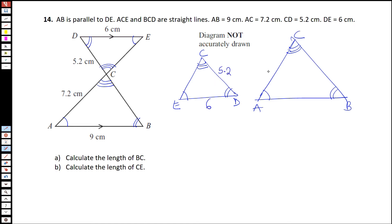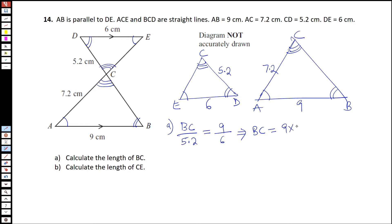The first question is to calculate BC. Taking the ratio of corresponding sides: BC over ED which is 5.2 equals AB which is 9 over 6. So BC equals 9 multiplied by 5.2 over 6, which gives us 7.8.